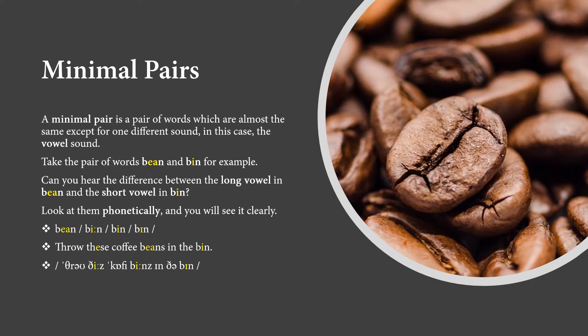Minimal Pairs. A minimal pair is a pair of words which are almost the same, except for one different sound. In this case, the vowel sound. Take the pair of words BEAN and BIN, for example. Can you hear the difference between the long vowel in BEAN and the short vowel in BIN? Look at them phonetically and you will see it clearly.